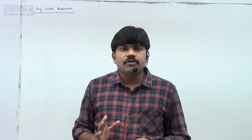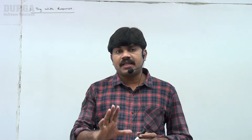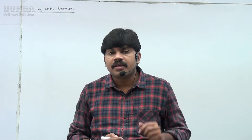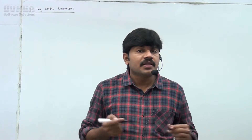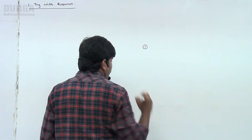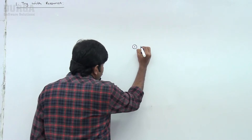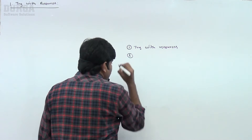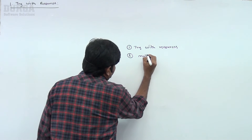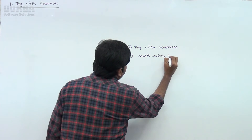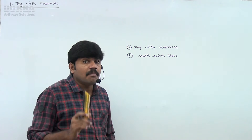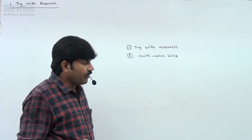Hello friends, in the last videos we covered very clearly about top 10 exceptions. Now I want to explain two new features which came as part of the 1.7 version of Java. In the 1.7 version, there are two new features with respect to exception handling. The first one is try-with-resources, and the second one is multi-catch block. These are two new concepts which came in the 1.7 version.